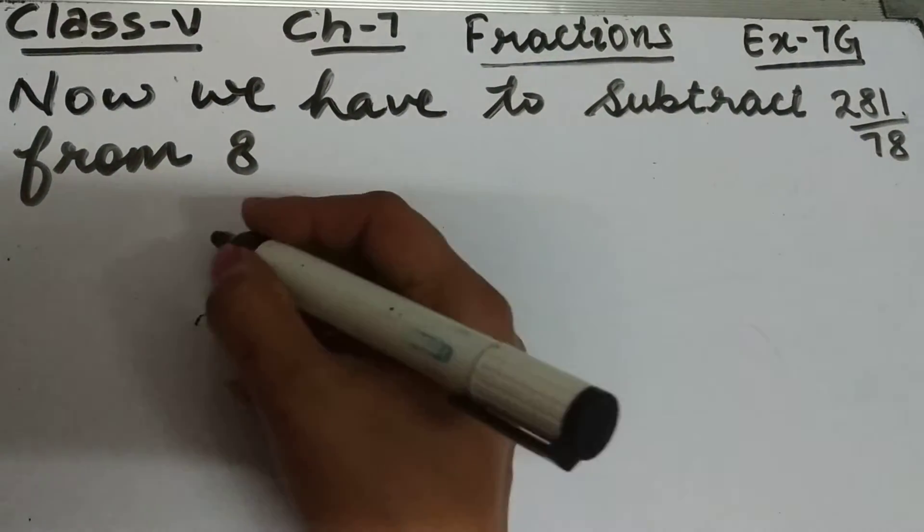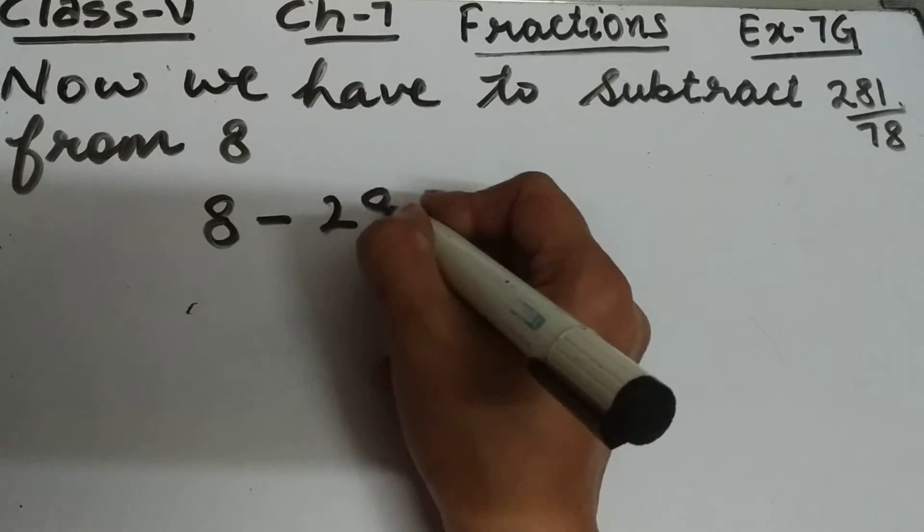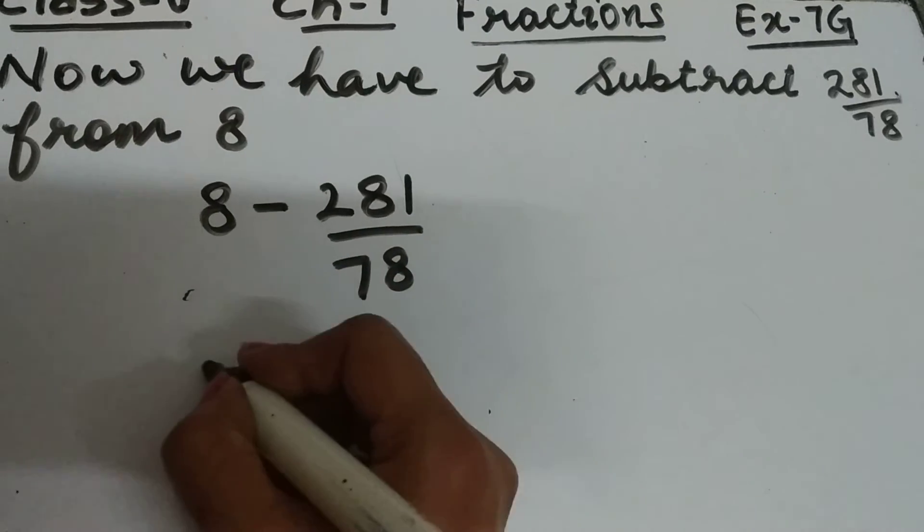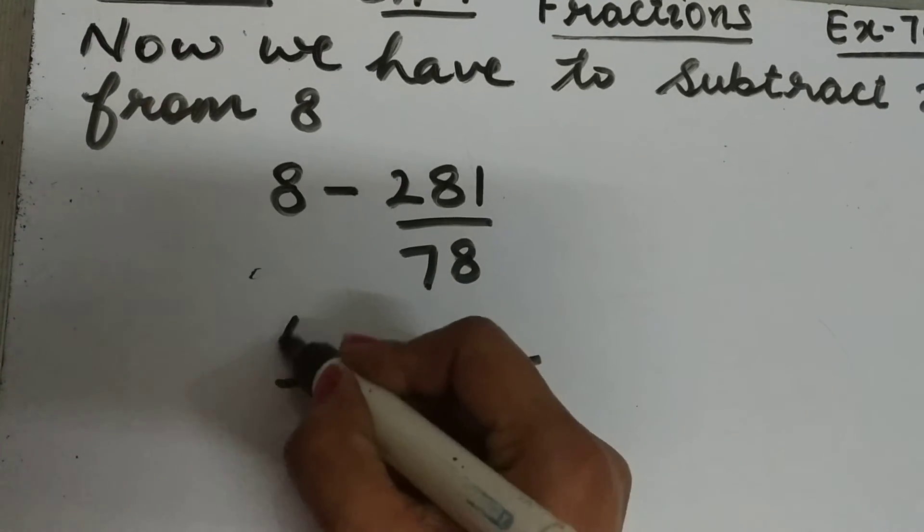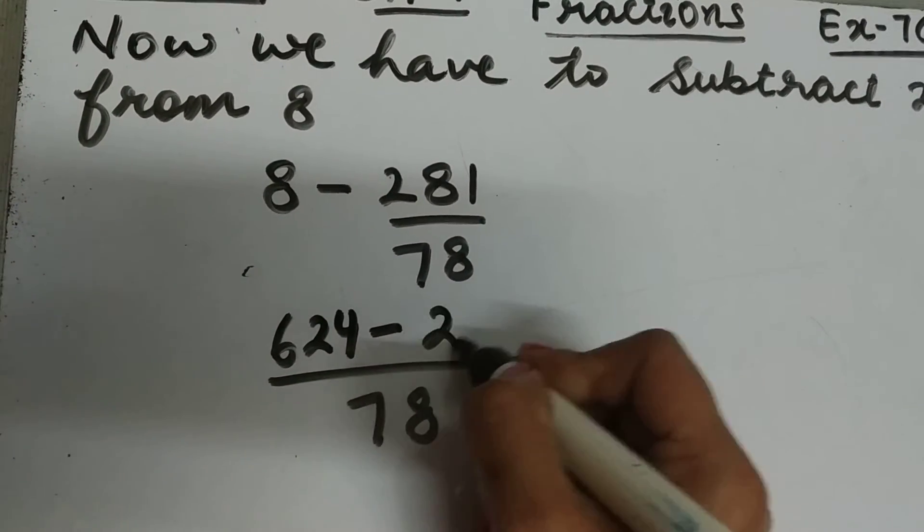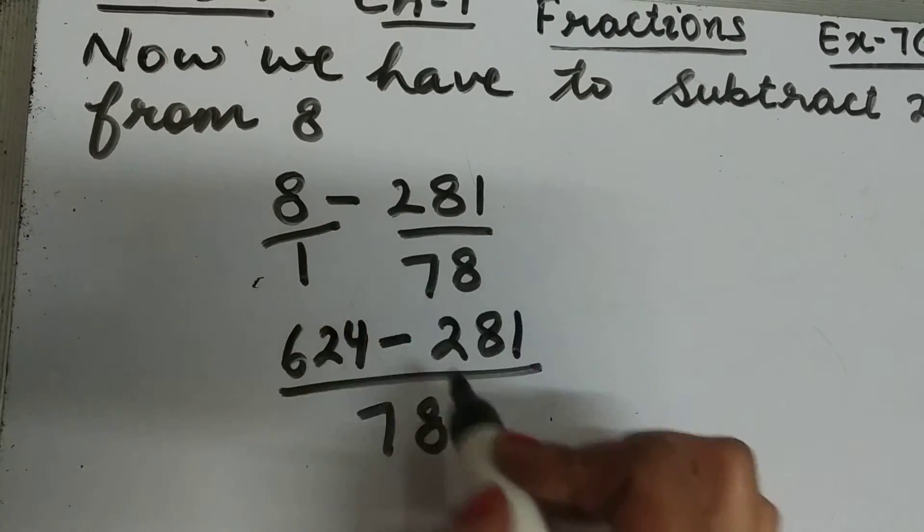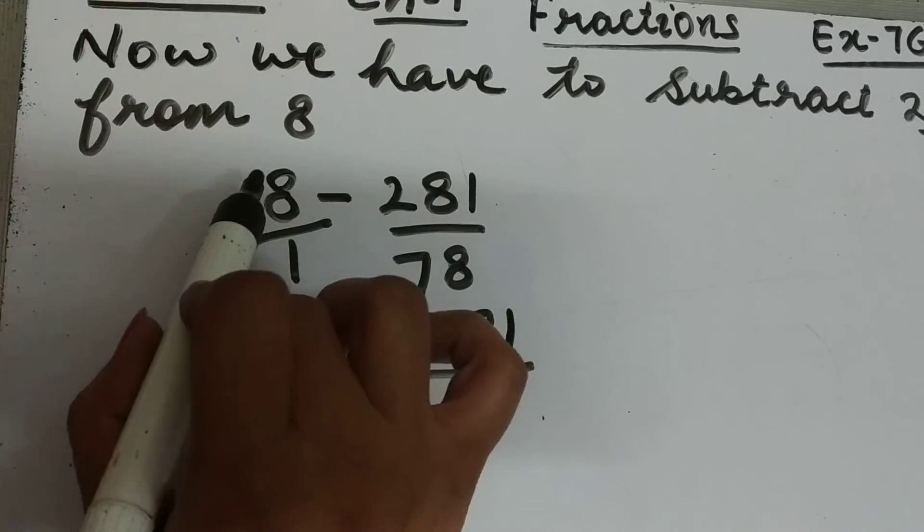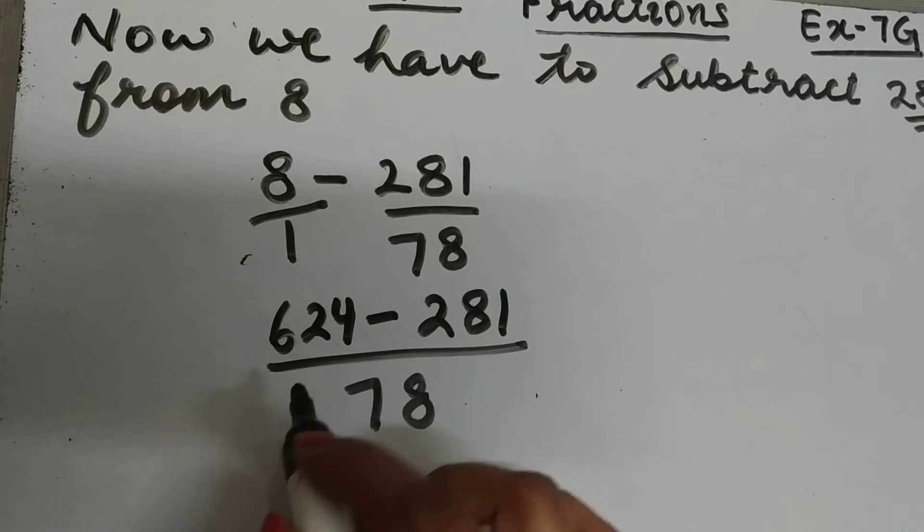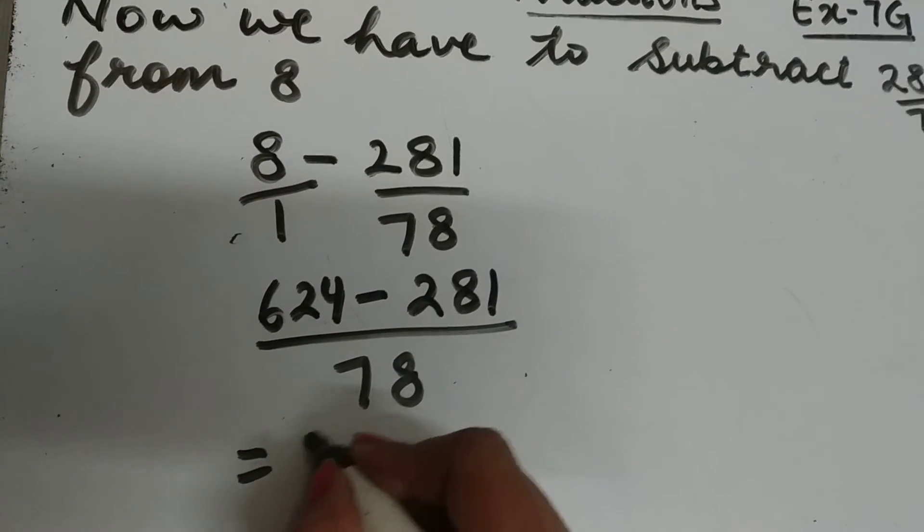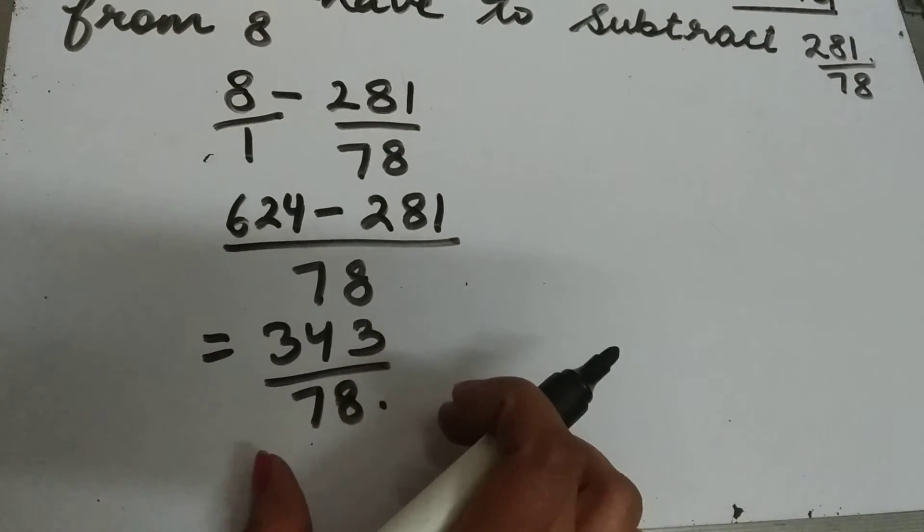We will subtract 281 upon 78 from 8. LCM will be 78. So 8 equals 624 upon 78. Here 78 ones, we will divide 78 by 1, it will be 78, and 78 eights are 624. So subtract 281 from 624.